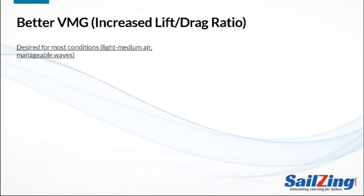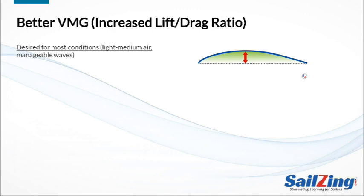Let's discuss overall sail performance in terms of VMG, or velocity made good. As we've emphasized in this series, improving sail performance is about increasing the lift to drag ratio. In most conditions, the highest lift to drag ratio gives you the best VMG. So what's the best mainsail shape for VMG in light to moderate winds and manageable waves? Here's the suggested shape: first, a slightly rounded entry.